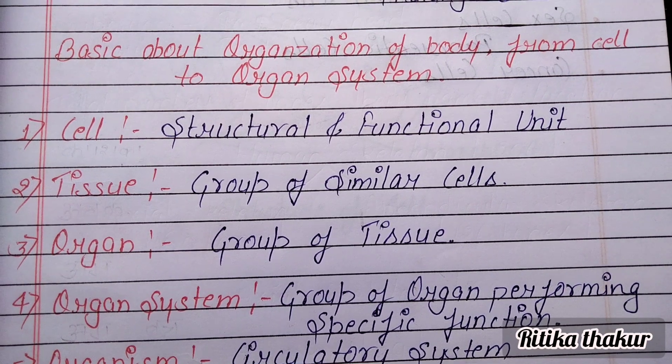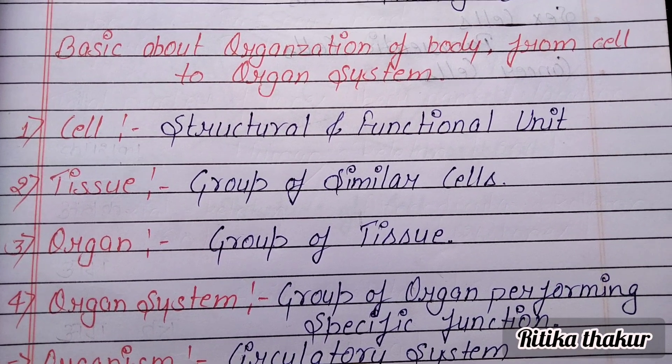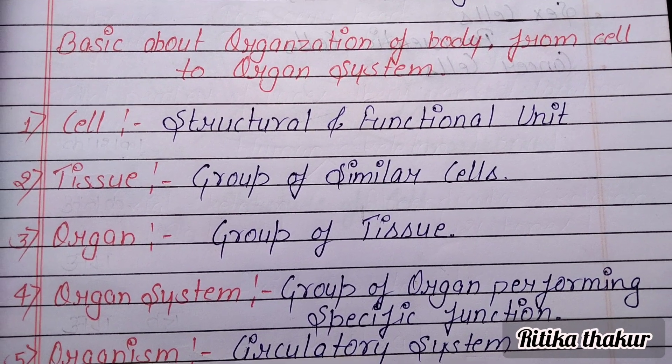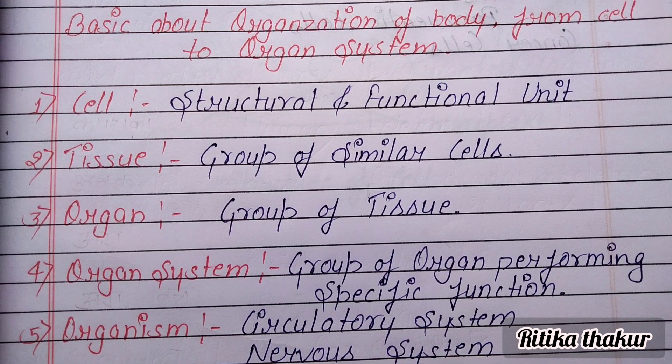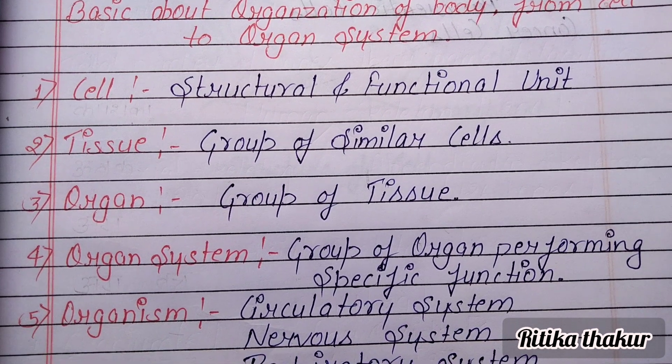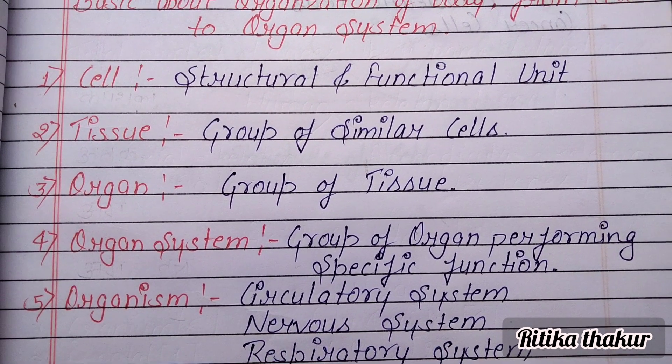Basically about organization of body from cell to organ system. Cell is the structural and functional unit. Tissue is a group of similar cells. Organ is a group of tissue. Organ system is a group of organs.